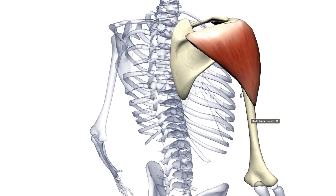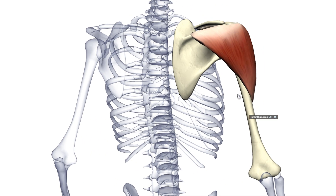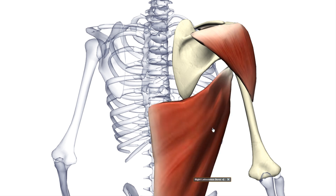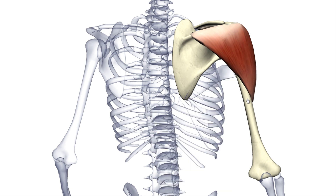The muscle that antagonizes the deltoid is the latissimus dorsi. Here is the latissimus dorsi muscle. Another shoulder muscle that I will talk about is the teres major. This is the teres major muscle.